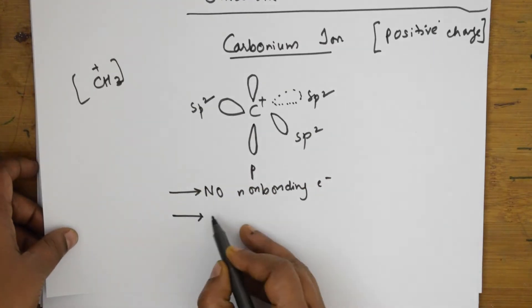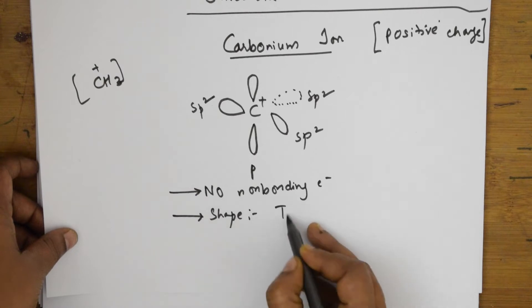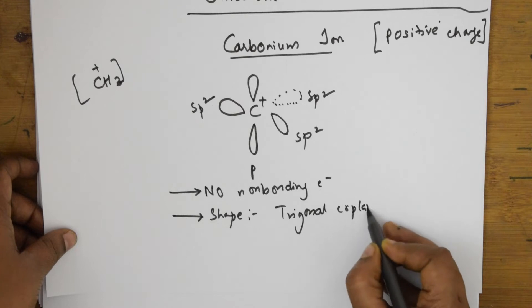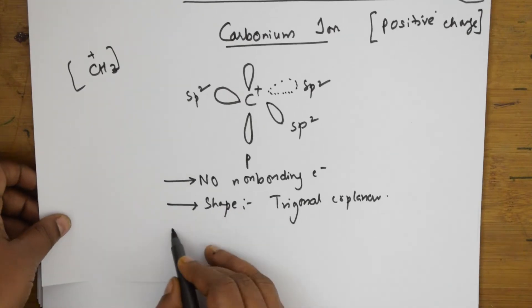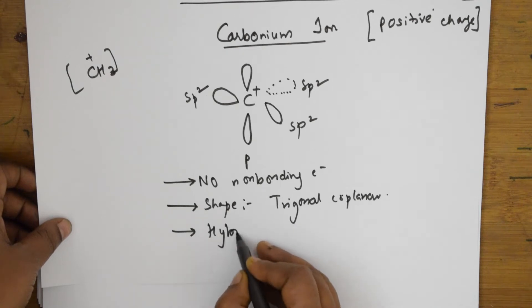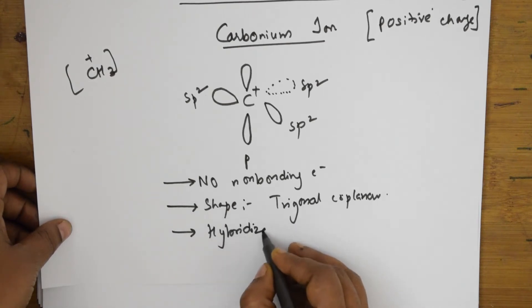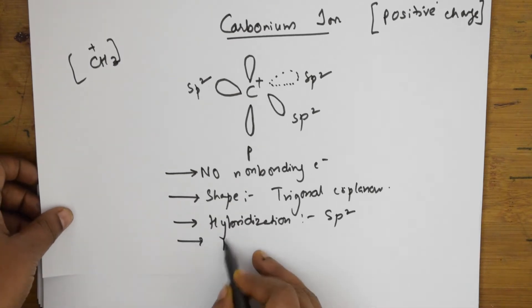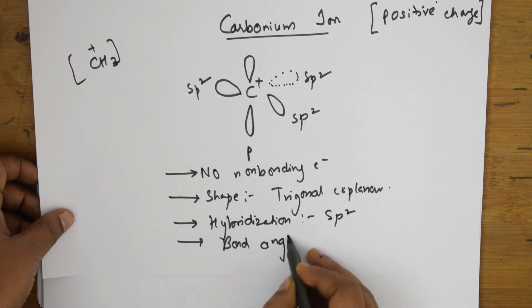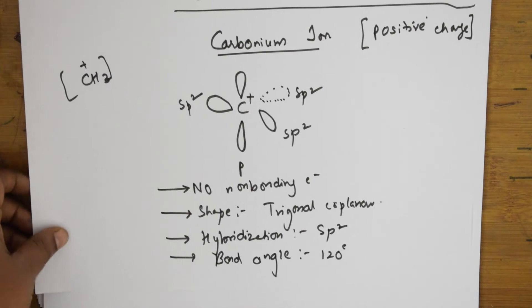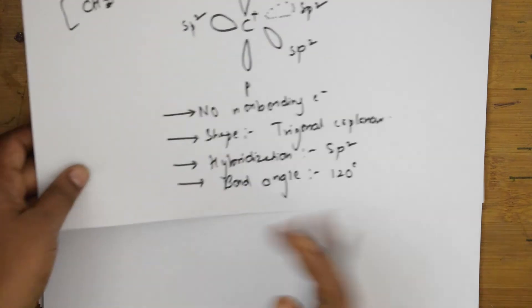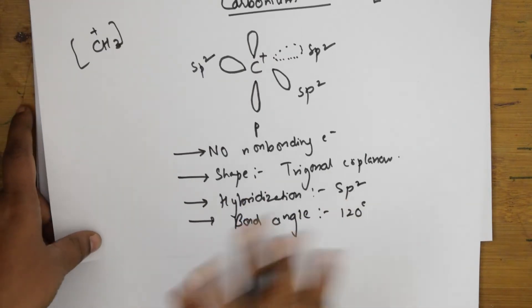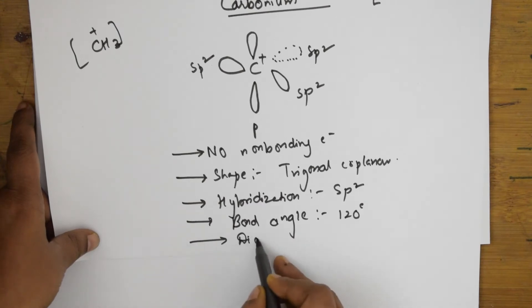The shape is trigonal coplanar. The hybridization is SP2. The bond angle is 120 degrees. Regarding its magnetic property — whether it is paramagnetic or diamagnetic — there are no unpaired electrons, all are paired, hence it is diamagnetic in nature.